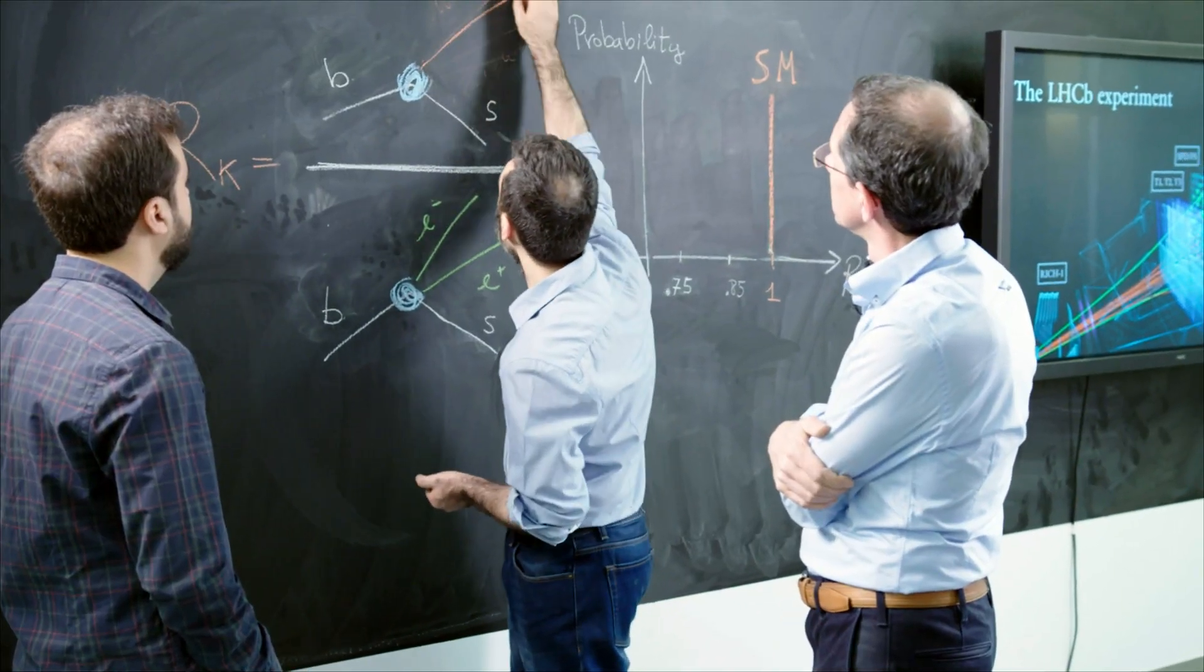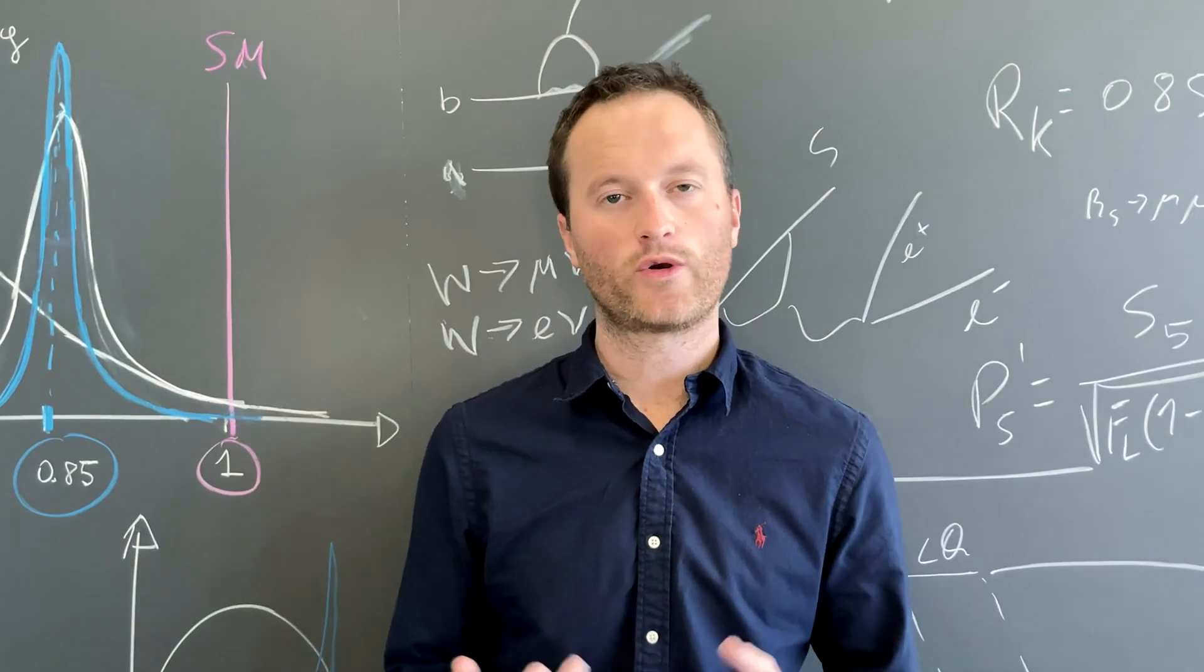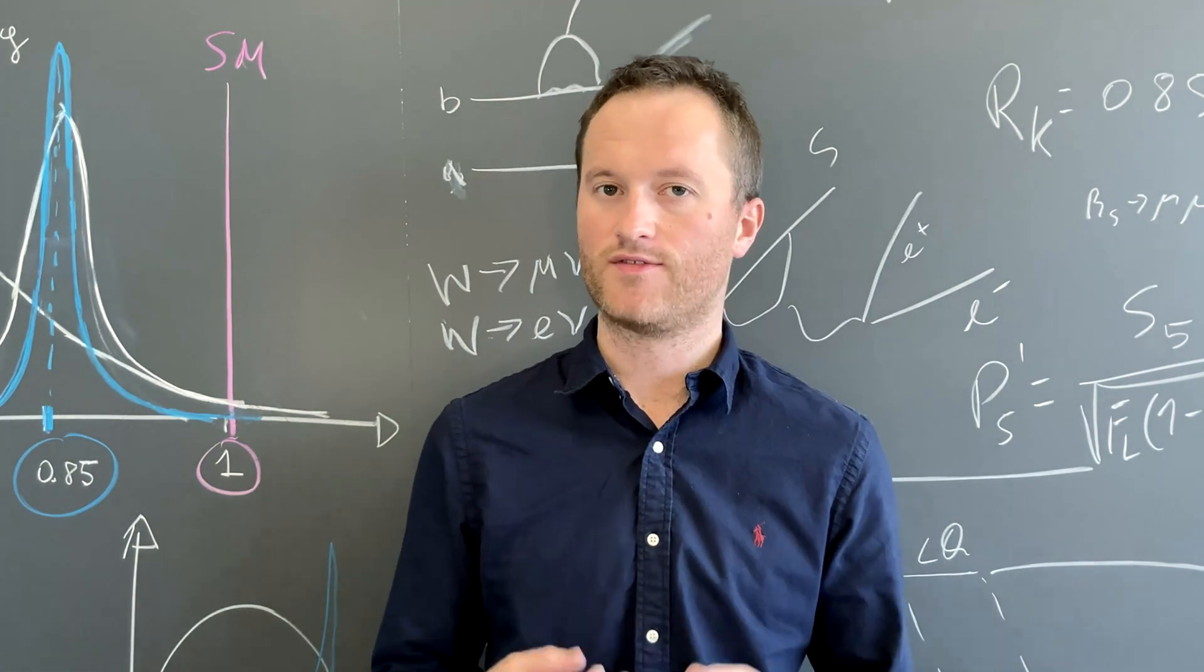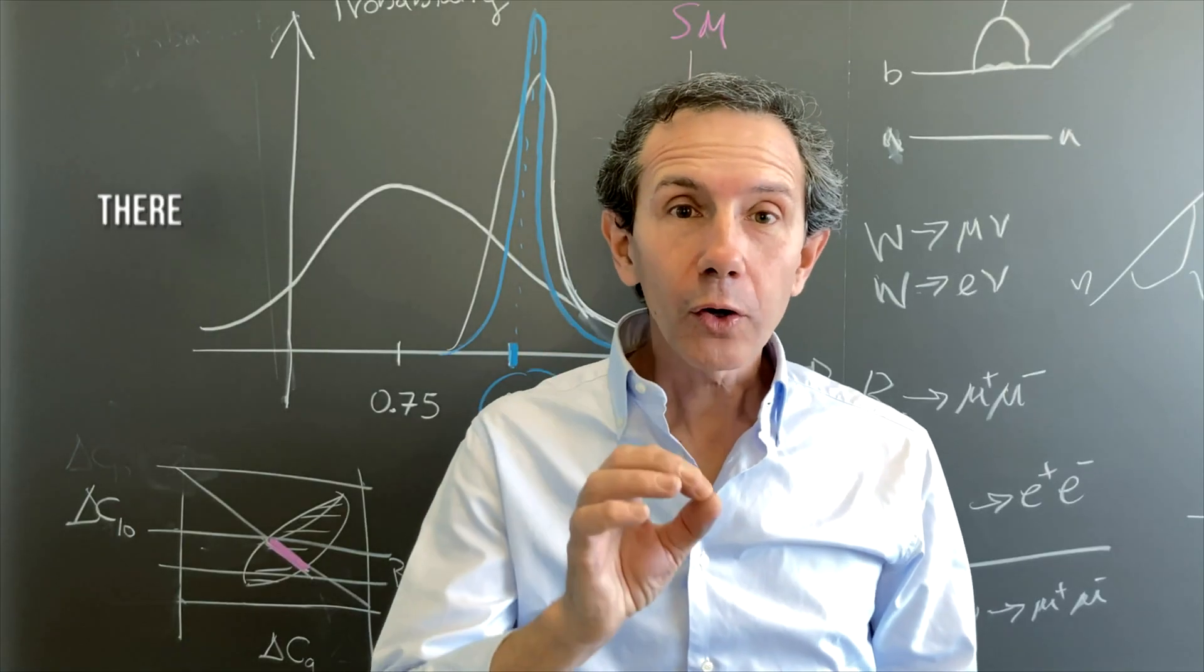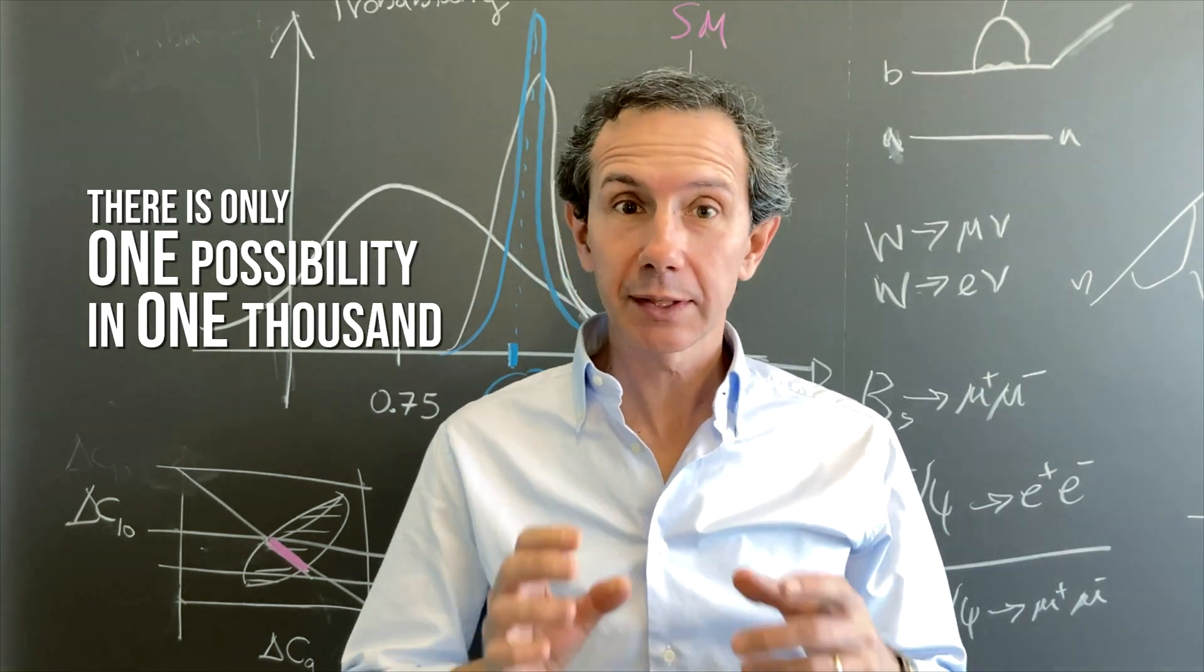We were expecting the electron and muon pairs to show up with the same frequency. Instead, according to our latest measurement, the muon pair appears to be rarer than the electron pair. There is only one possibility in 1,000 that this anomalous result is due to a statistical fluctuation.